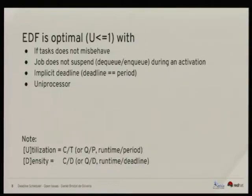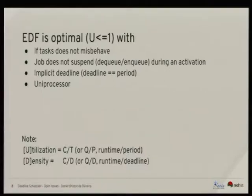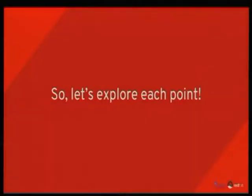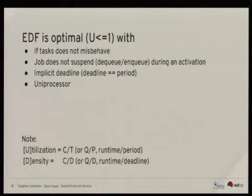Utilization is the ratio of how much time a task needs to run in every period — like running 10 milliseconds every 100 milliseconds, which is 10% of CPU. And density is the runtime over the deadline, used when the deadline is shorter than the period.